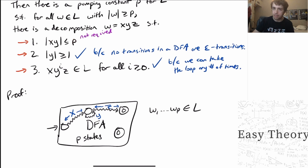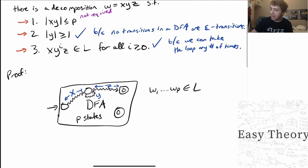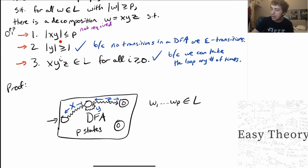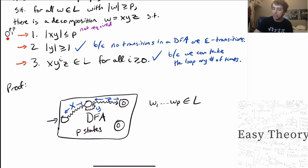Now let's look at the first condition. It says that the y part (the repeating part) together with the x part (the beginning of the string) comprises at most p characters. This condition is actually not required. The second condition is required because pumping the empty string changes nothing. But for this first condition, it's not required — and there's a very good reason for that. It turns out it makes the proofs we do to show languages are not regular a lot easier. Usually you pick a string like 0^p 1^p, where the first p characters are all the same, so enforcing this condition means the repeating part is within that first block of zeros — making the analysis much simpler.